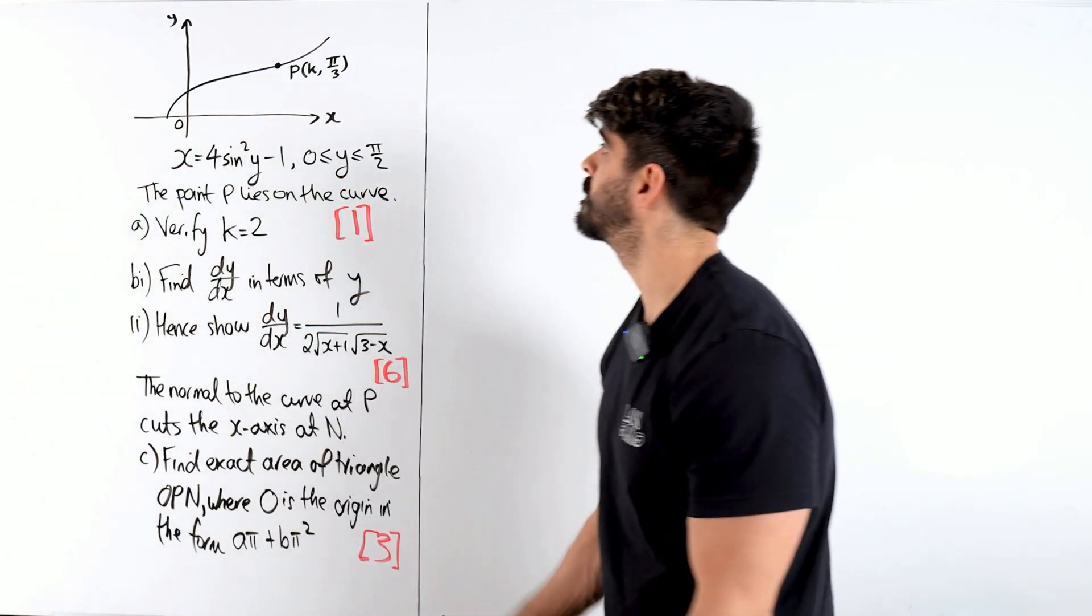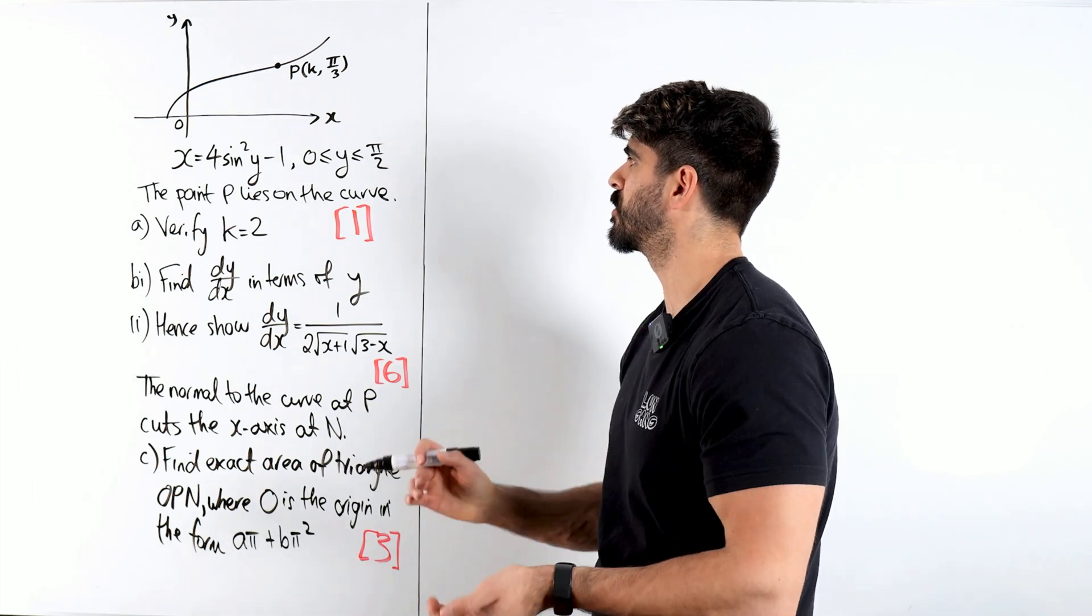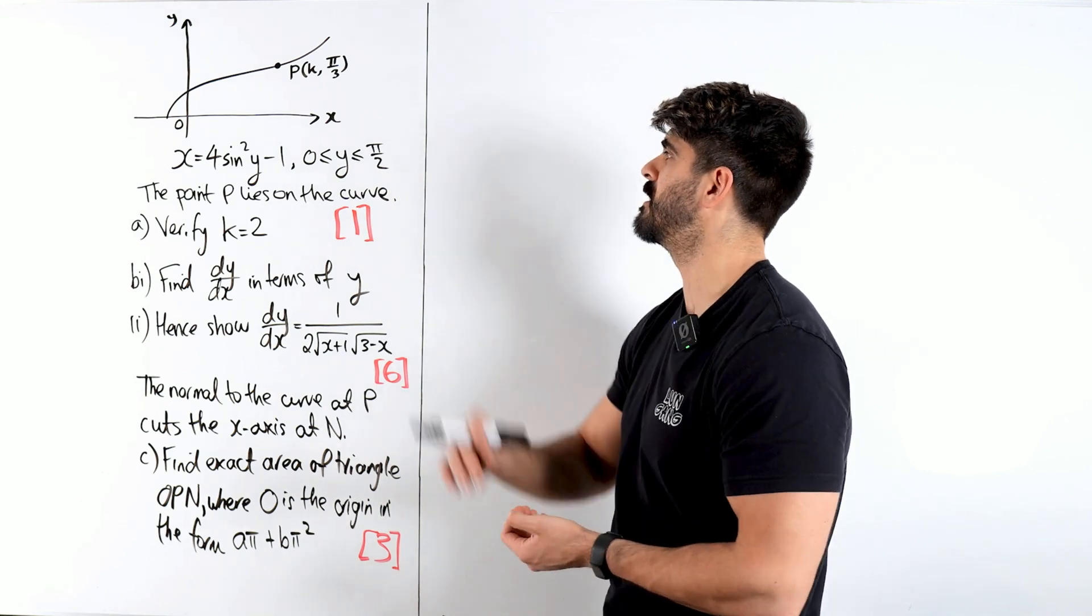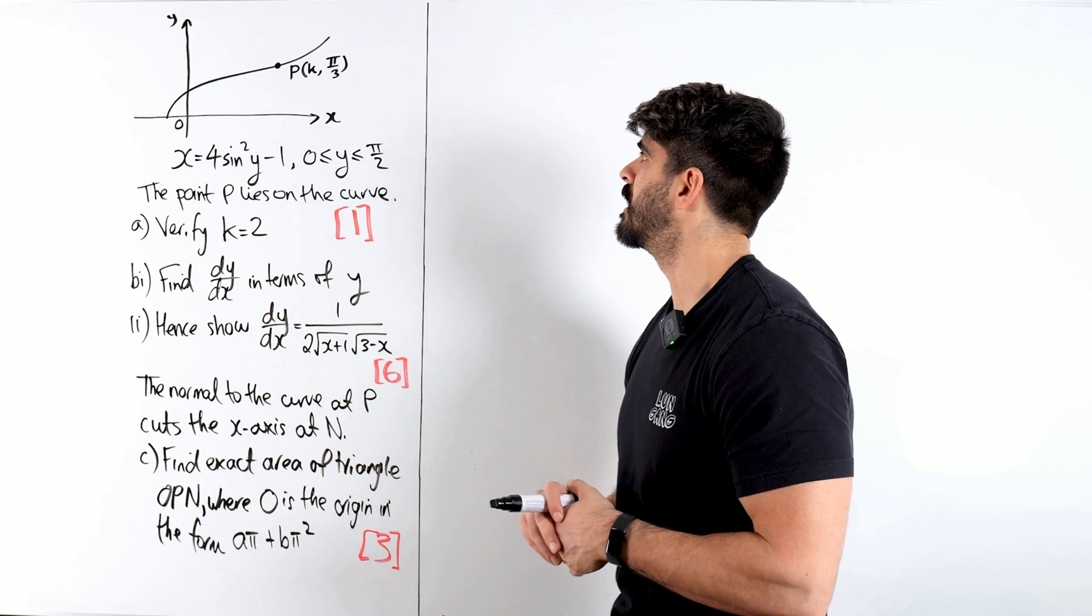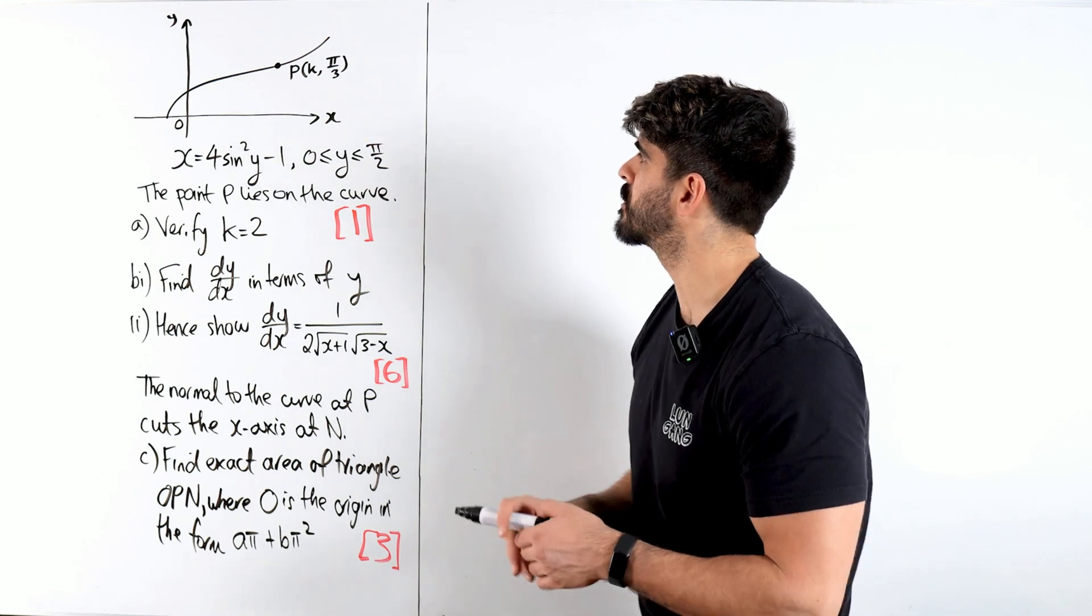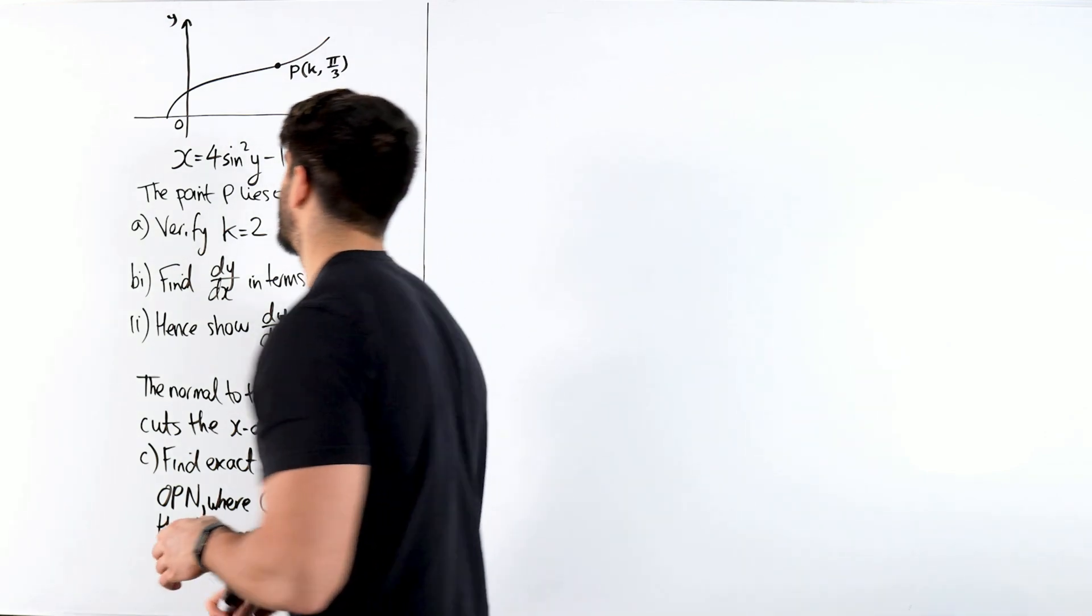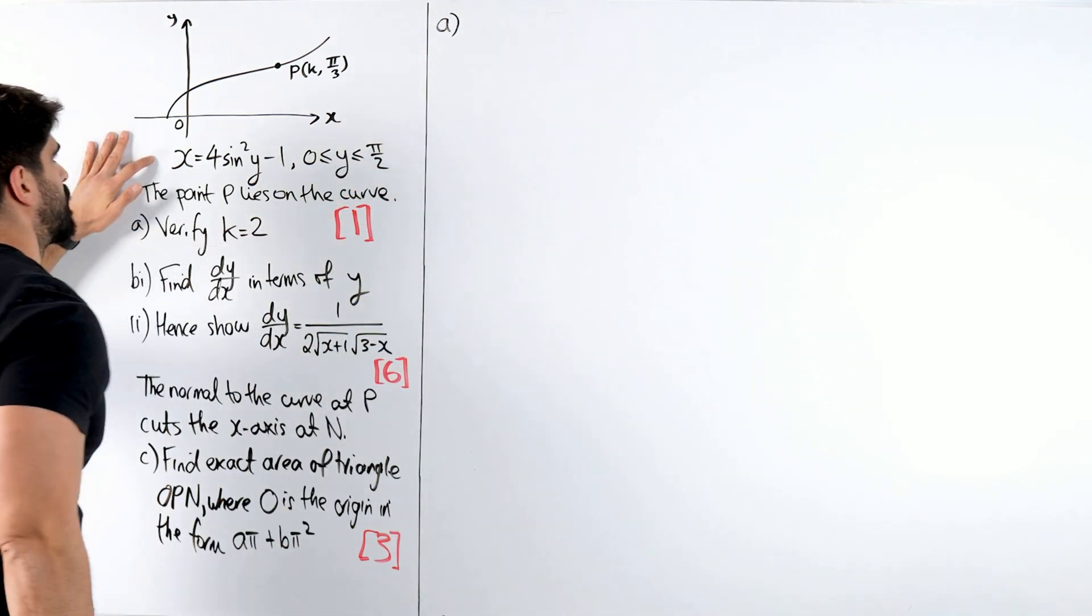So the question gave us this diagram, x is 4 sin squared y minus 1 with y being between 0 and pi over 2. It says the point p lies on the curve. Verify that k is 2. That just means that you have y is pi over 3, you're just subbing that in. That's a nice and easy one mark question.